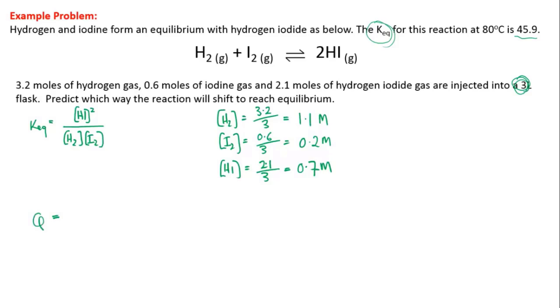So our Q is going to be concentration of hydrogen iodide squared, so that's 0.7 squared over the concentration of hydrogen times the concentration of iodine. So that's 1.1 times 0.2. And if you evaluate that, you get a value of Q of 2.2.